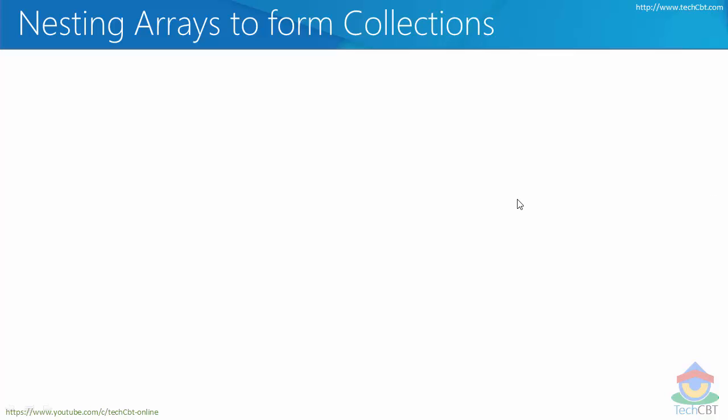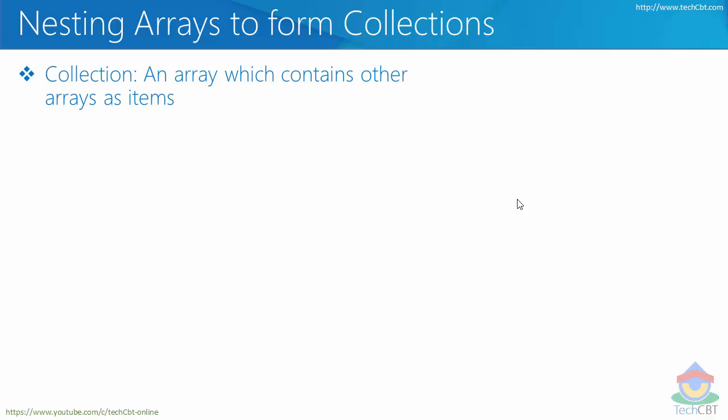In this section we are going to see how to nest associated arrays in order to form collections. A collection means nothing but an array which contains other arrays as items. So I can have an array and inside that array I can have each of the elements be arrays themselves. Whenever you have an array with two other arrays inside, we call them nested arrays.